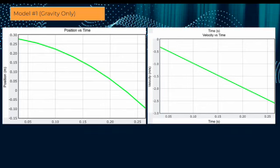And then as you can see here, with the gravity only model, the results look pretty similar to our initial experiment. The position versus time graph is also curved and then the velocity is a downward sloping line.